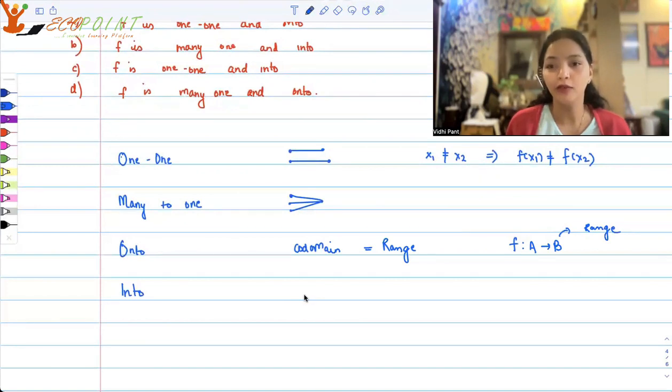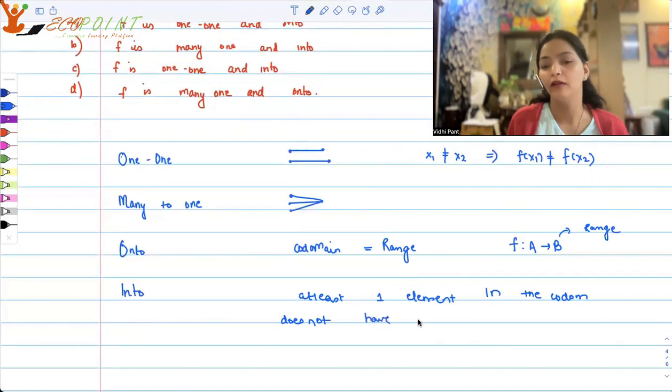Into. An into function is generally defined as a function where there's at least one entry left in the co-domain which doesn't have a pre-image. At least one element in the co-domain does not have a pre-image.